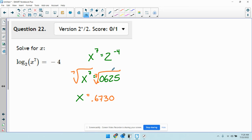And we get 0.673. 3 or 3 0, if you're rounding to 3 or 4 decimal places. And that's it.